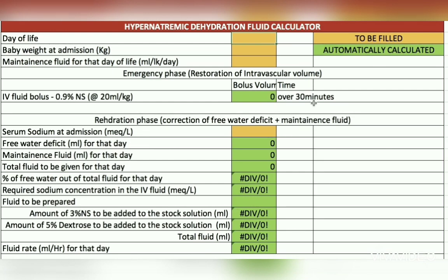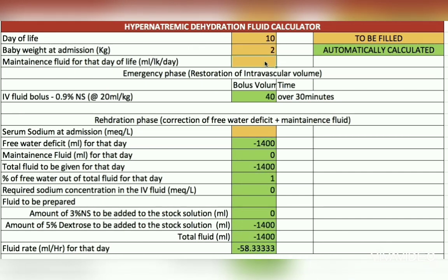In the calculator, yellow boxes require input values and green boxes are automatically calculated outputs. We enter: day of life = 10, baby's weight at admission = 2 kg, maintenance fluid = 150 ml/kg/day (for day 10 of life), and serum sodium = 180 mEq/L. The calculator then automatically computes the emergency phase output: give a bolus of 0.9% normal saline, 40 ml over 30 minutes.